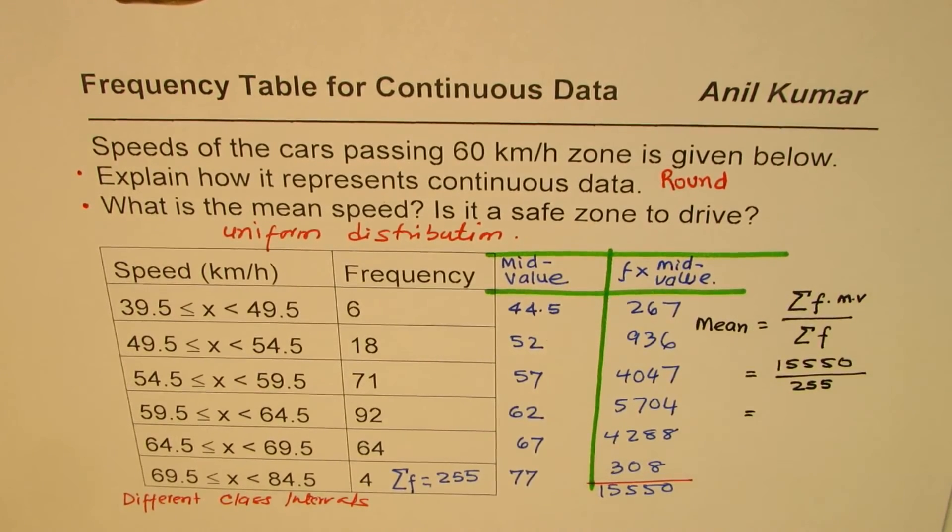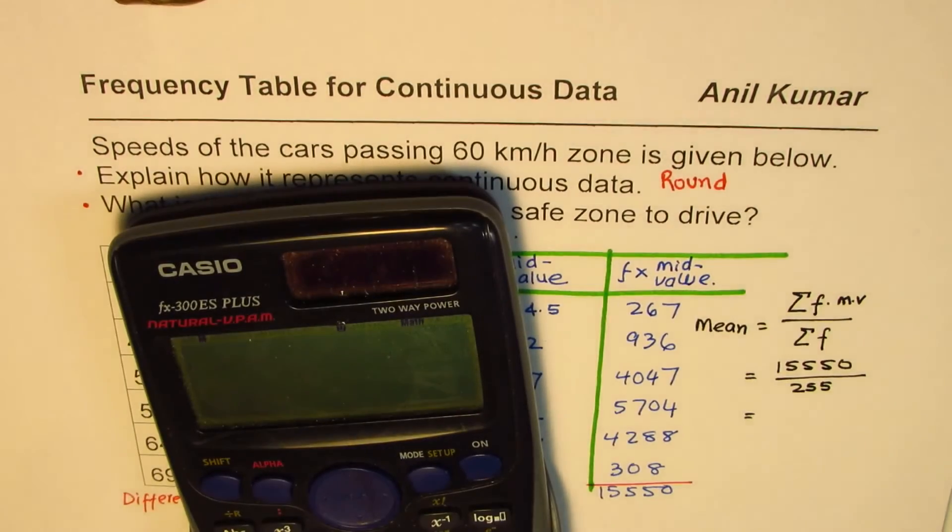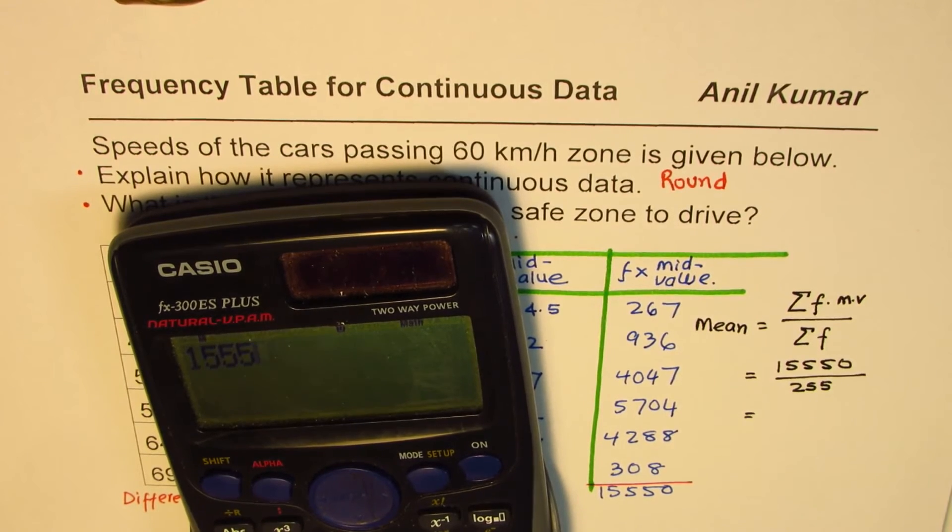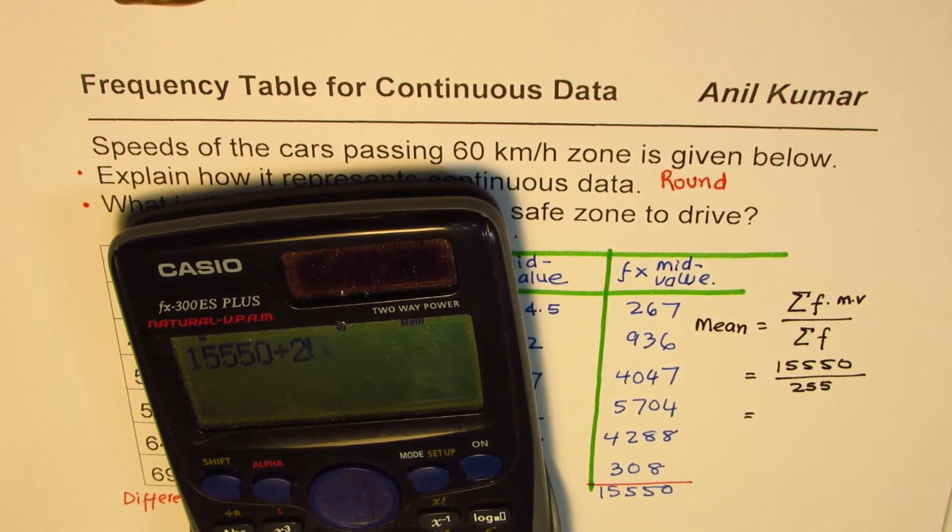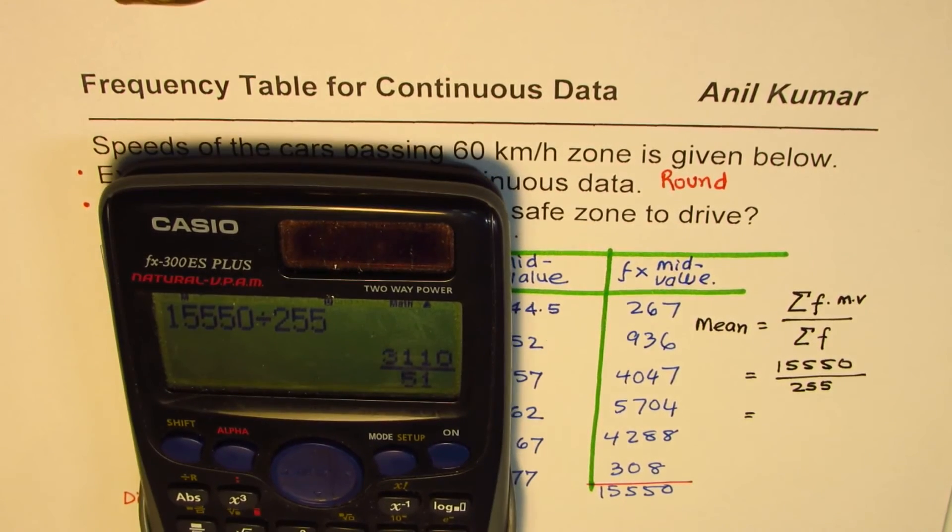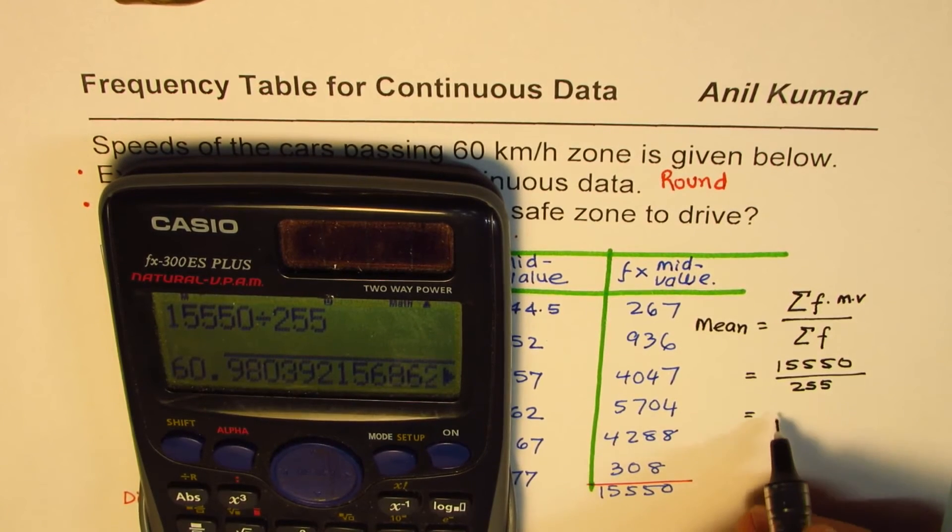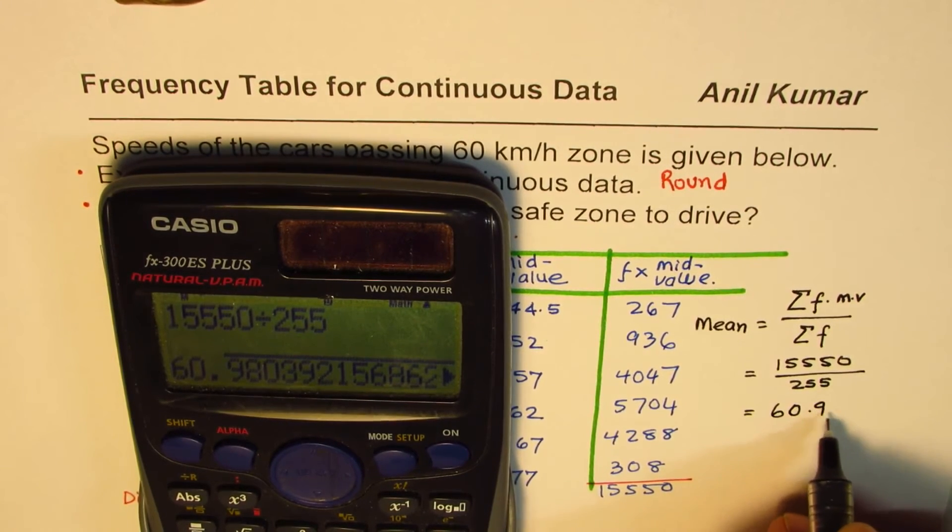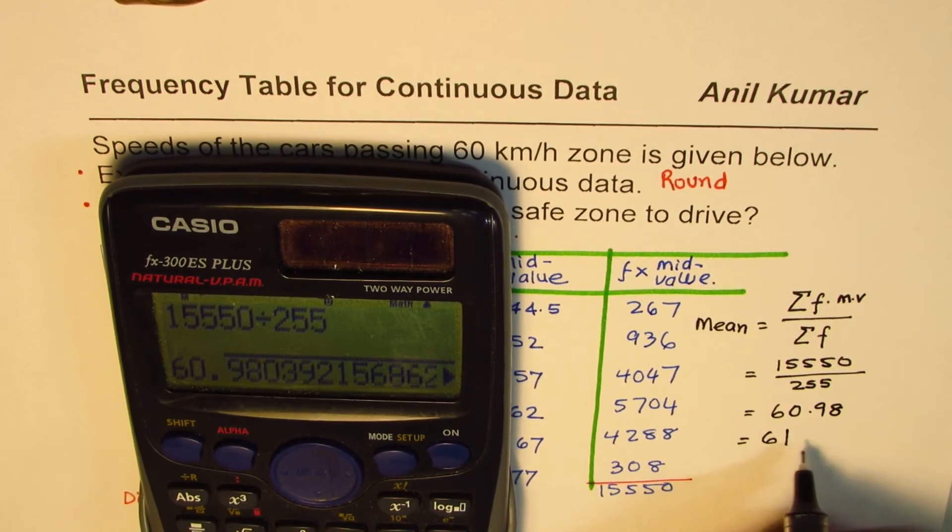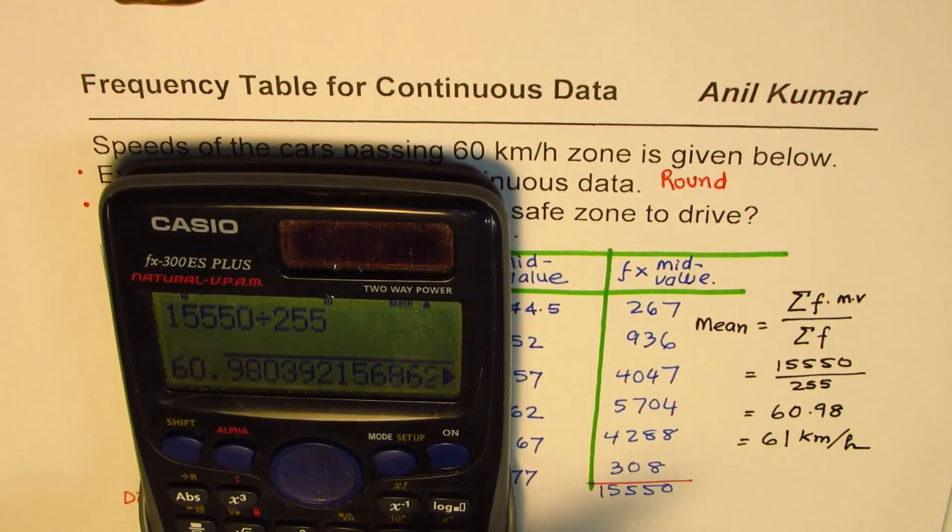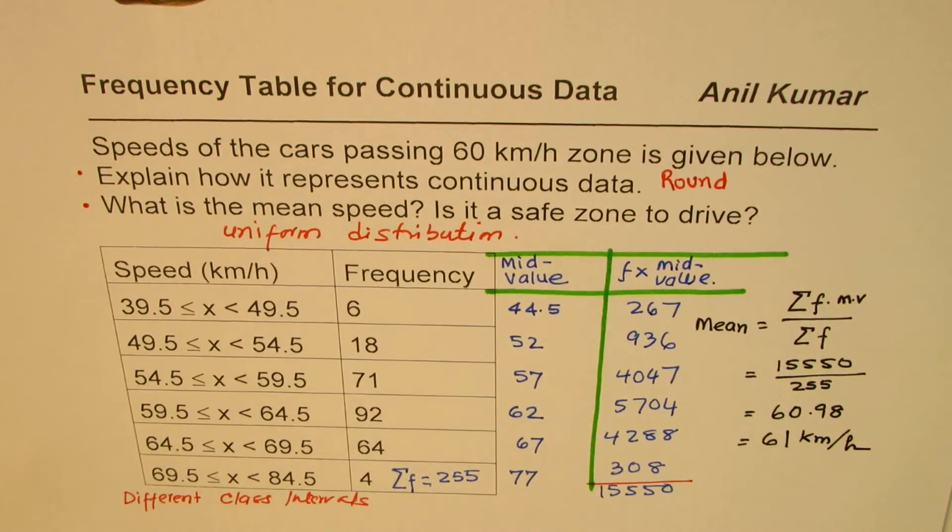Using the calculator, 15550 divided by 255 equals 60.98, or you can say 61 kilometers per hour. That is the average or mean speed.